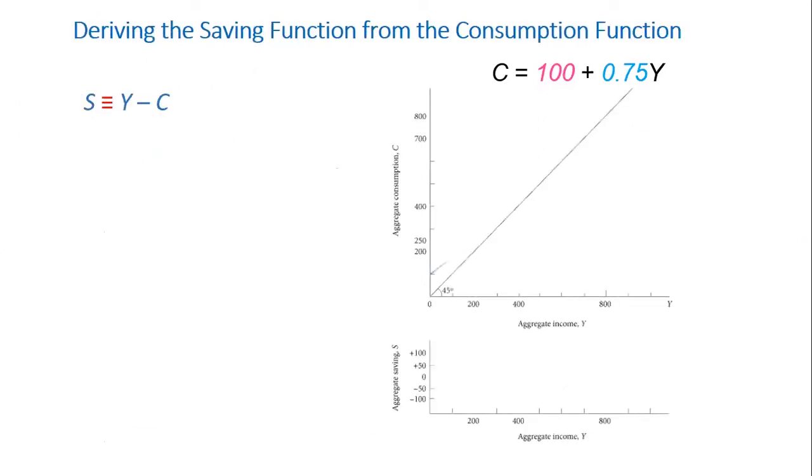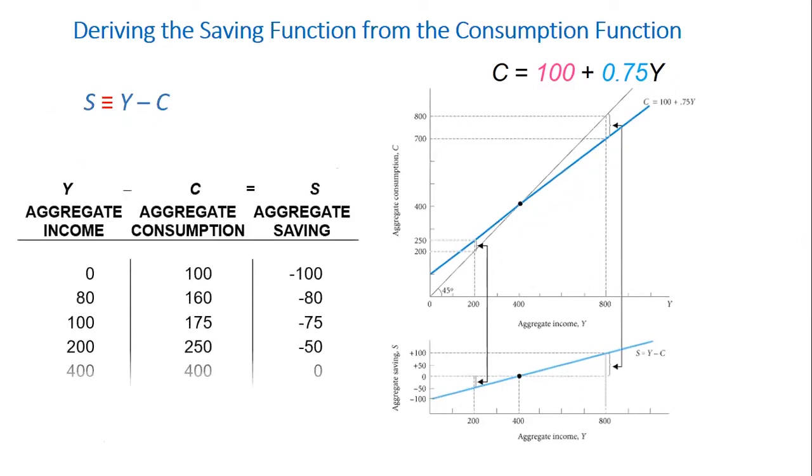Now, because S equals Y minus C, it's easy to derive the saving function from the consumption function. The 45 degrees line drawn from the origin can be used as a convenient tool to compare consumption and income graphically. In fact, it represents the set of points where the aggregate consumption in the economy is equal to output or national income.